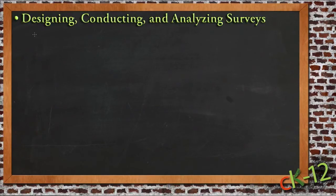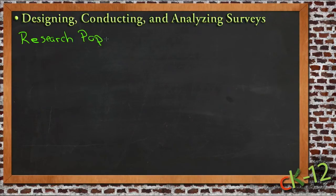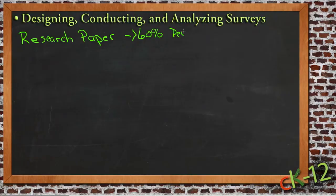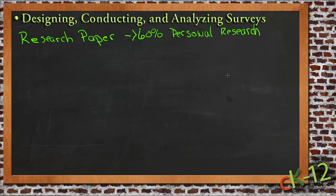One of the requirements for graduation at my own school is for each student to write a research paper, and that research paper has to include a specific amount of individual personal research — 60% or more. The reason I bring that up is because personal research is what this particular topic is all about.